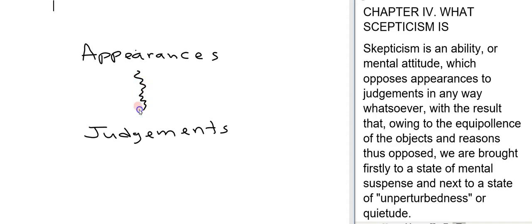And that for Sextus somehow these are opposed in such a way that something emerges from this. What that something is he refers to as equipolence. Now why is Sextus going to do this? Well he tells us that here as well, with the result that owing to the equipolence of the objects and reasons we are brought firstly to a state of mental suspense and next to a state of unperturbedness.